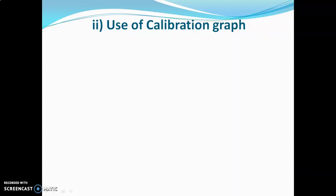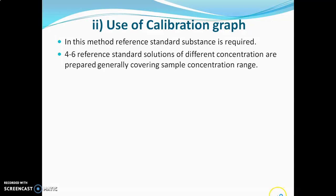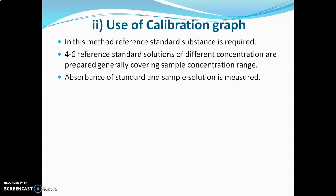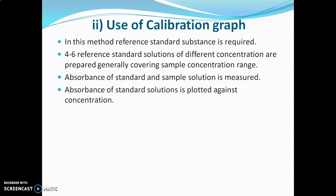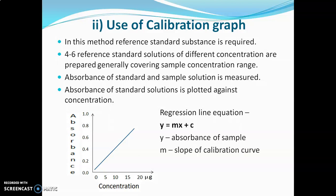The second method is the calibration graph method, which requires a reference standard substance. Four to six standard solutions of different concentrations are prepared covering the sample concentration range, and their absorbances are measured. Absorbance is plotted against concentration on a graph (concentration on x-axis, absorbance on y-axis), yielding a straight line due to the linear Beer's law relationship. The unknown concentration is calculated using the regression line equation y = mx + c, where y is absorbance, m is slope, x is concentration, and c is the intercept. This is the most accurate method.